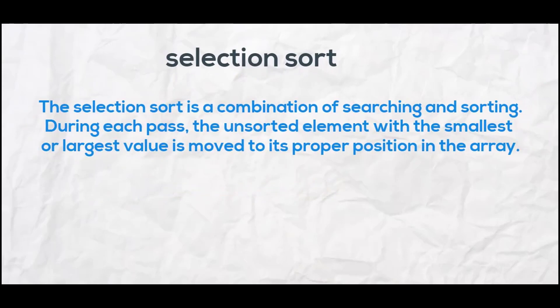Selection sort is a combination of searching and sorting. During each pass, the unsorted element with the smallest or largest value is moved towards its proper position in the array.